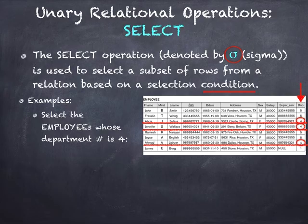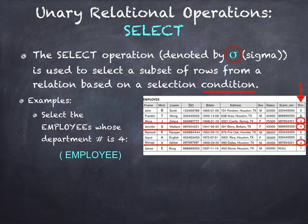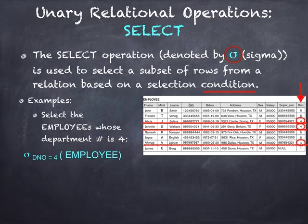How do we write this in a relational algebra expression? First, I like to think about which table I'm dealing with — the employee table. The operation I'm going to use is sigma. So I write: sigma where DNO equals 4, applied to the employee table.